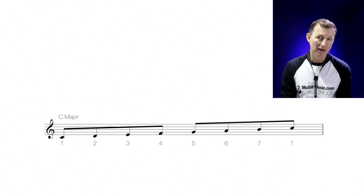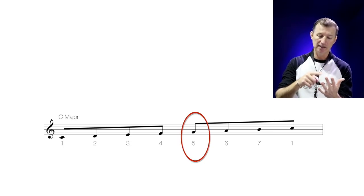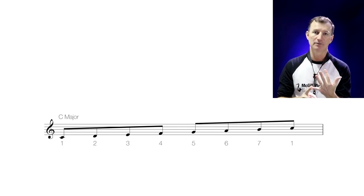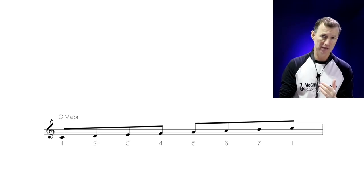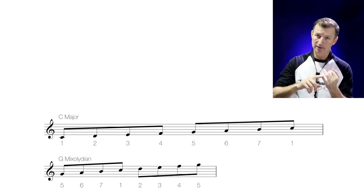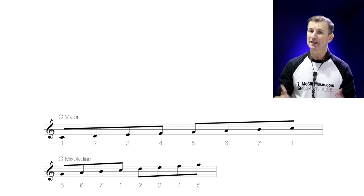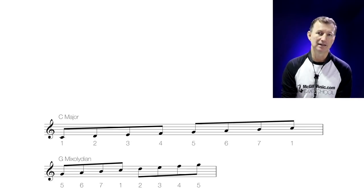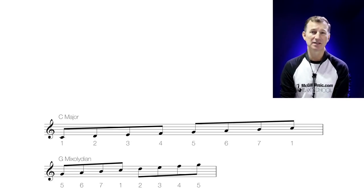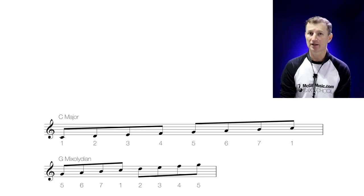So in our example of C major, the fifth note in the scale is G — C D E F G. G is our fifth note. So if we take the C major scale but starting on G and go up in the scale order — G A B C D E F back up to G — that's the Mixolydian mode. Dead easy. So effectively, a G Mixolydian mode in the key of C is a C major scale starting on the note G.